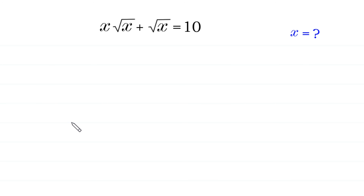Hello, welcome to how to solve this very nice radical equation for x values. The equation is: x times square root of x plus square root of x is equal to 10.